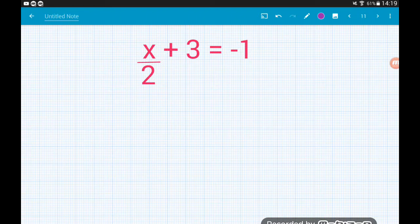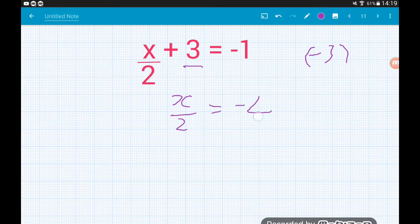x over 2, add 3 equals minus 1. So let's move the 3. Take away 3. That leaves us with x over 2 equals minus 1 minus 3 is minus 4. And then we've got x divided by 2. So we multiply by 2. That scooches the 2 over to the other side. 2 times minus 4 is minus 8. Job's a good'un.